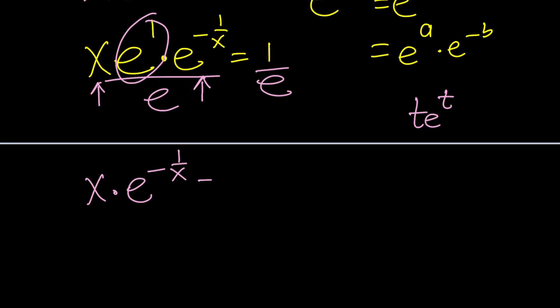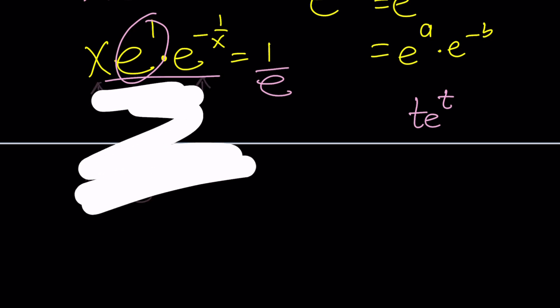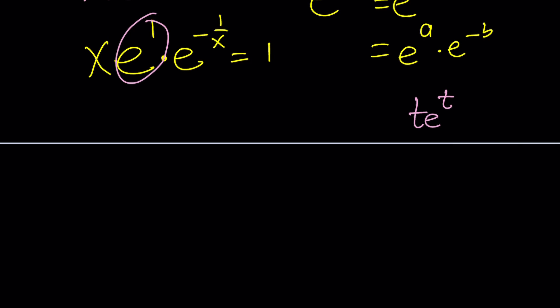So I think dividing by e was not necessary. Let's go back a little bit. Maybe just erase it. And then we'll probably take forever. Let's not divide by e.